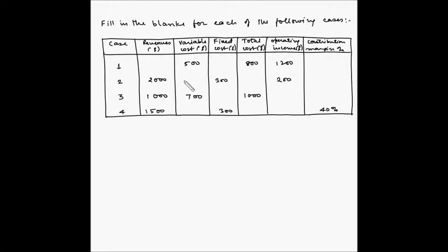Let us look at an example of cost-volume-profit analysis. We have been given some information for four independent cases and we have to fill in the blanks for each of these cases. The data we are analyzing has revenues, variable cost, fixed cost, total cost, and operating income.